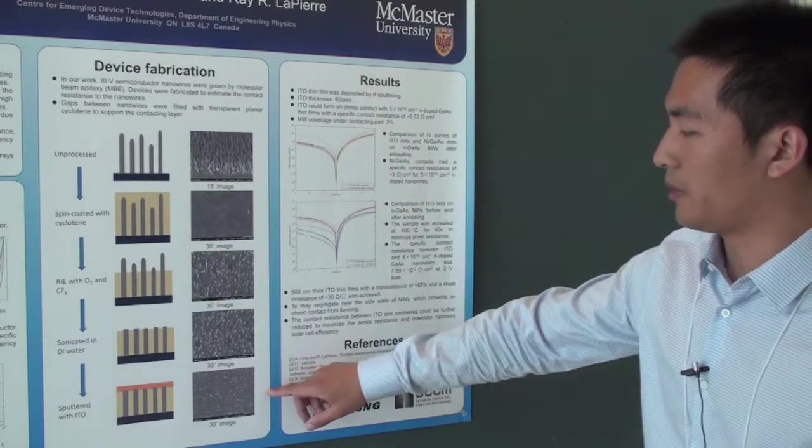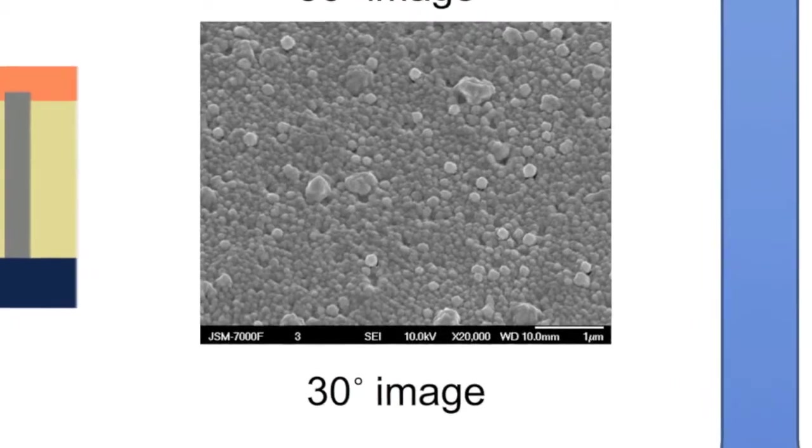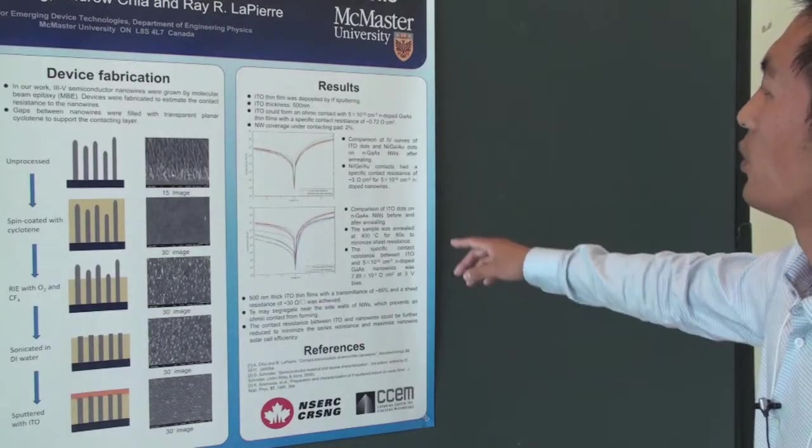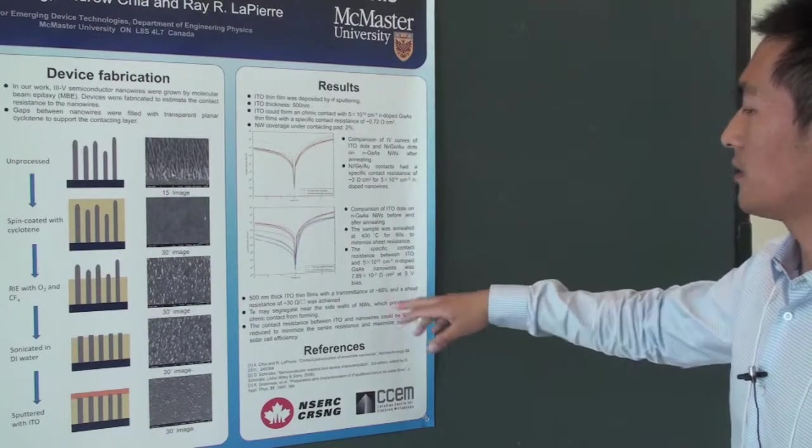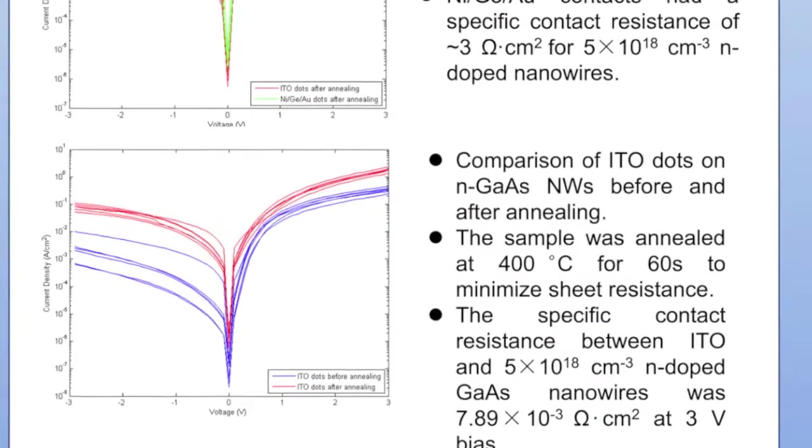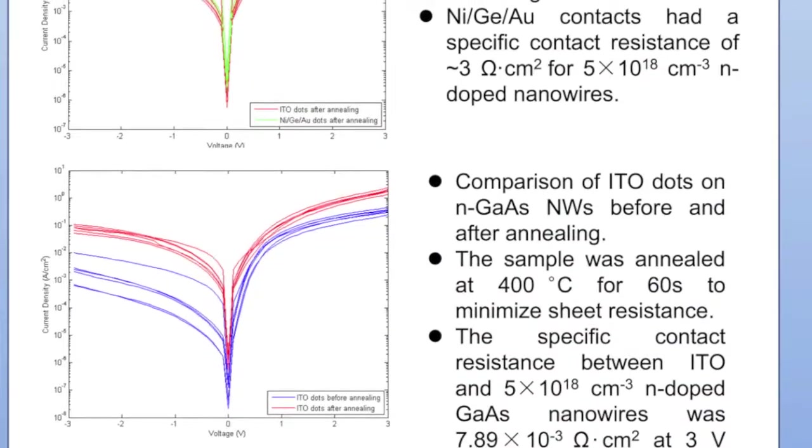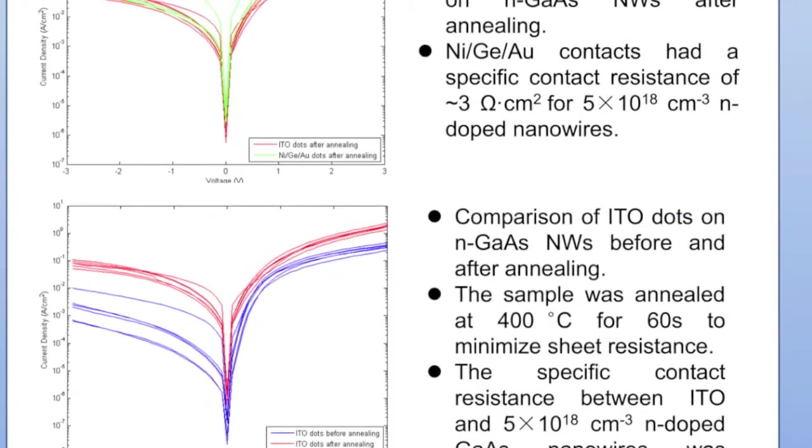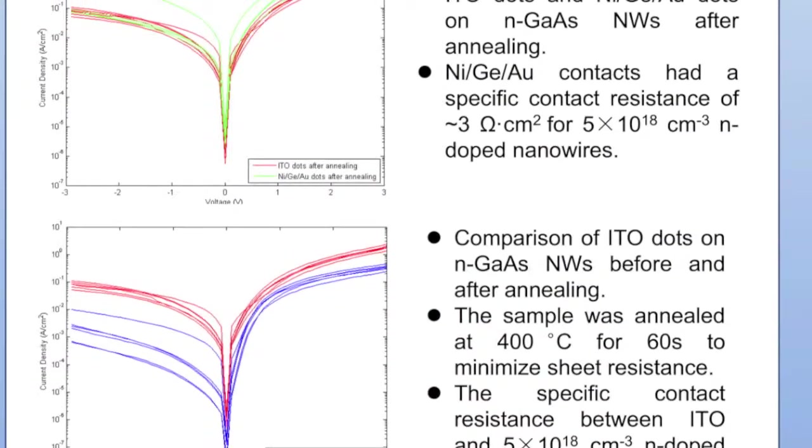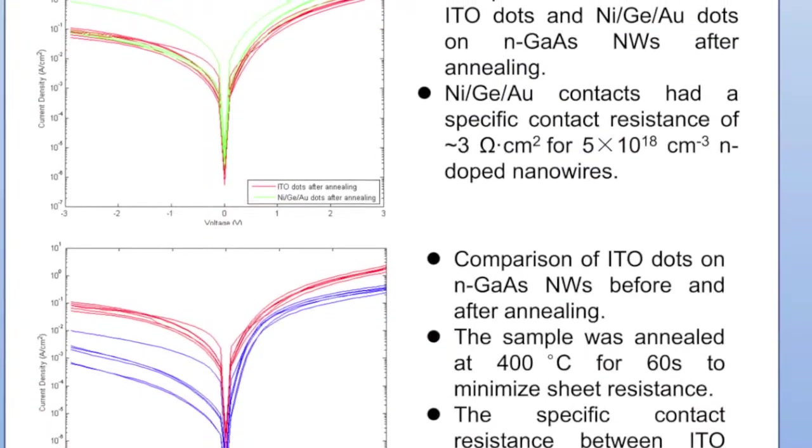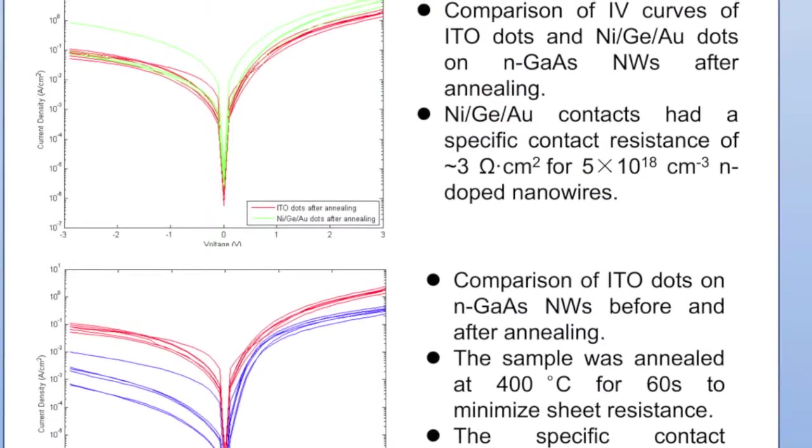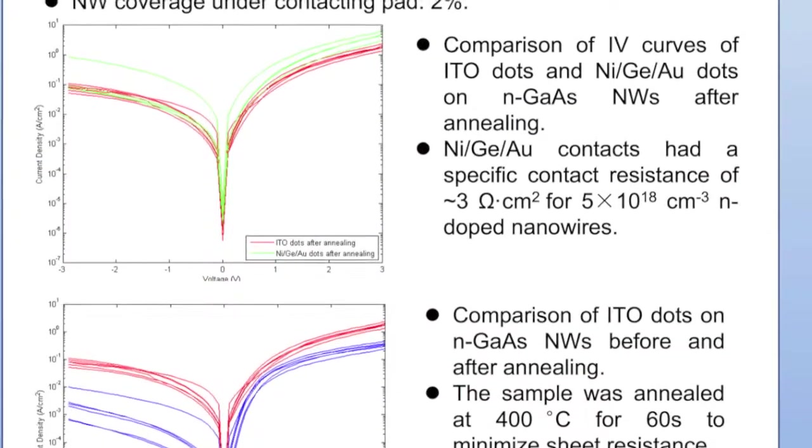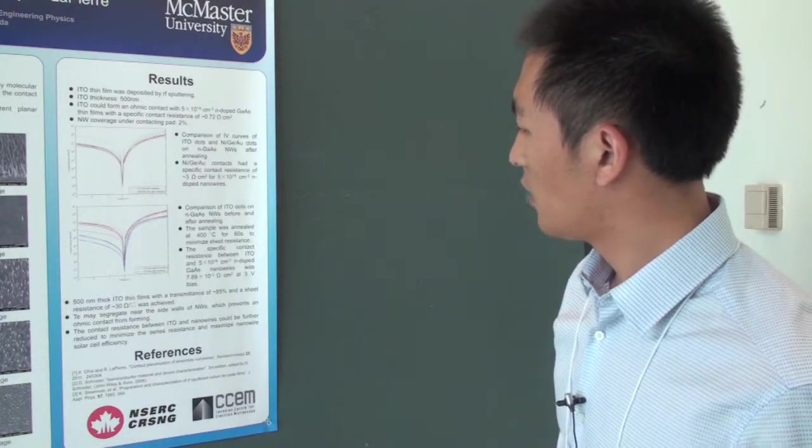You can see from this SEM image here, they form a very smooth surface on top of the wires. The results we've got is that we've got almost 8 times 10 to the minus 3 ohm square centimeters specific contact resistance for GaAs nanowires. The sheet resistance we found is 30 ohms per square for 500 nanometer thick ITO, and the transparency is 85 percent.